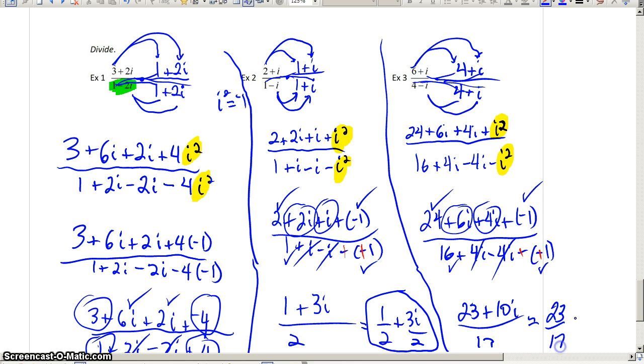23 over 17 plus 10i all over 17. And, now, with part 1 of 5.7, we have added, subtracted, multiplied, and now, finally, divided complex numbers. Hope things are going well. Best of luck to you.